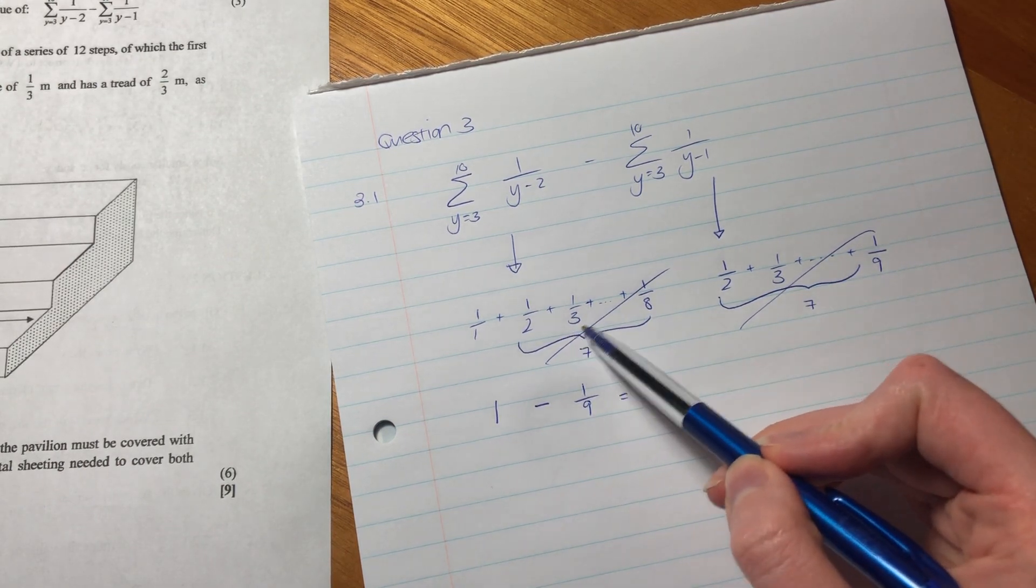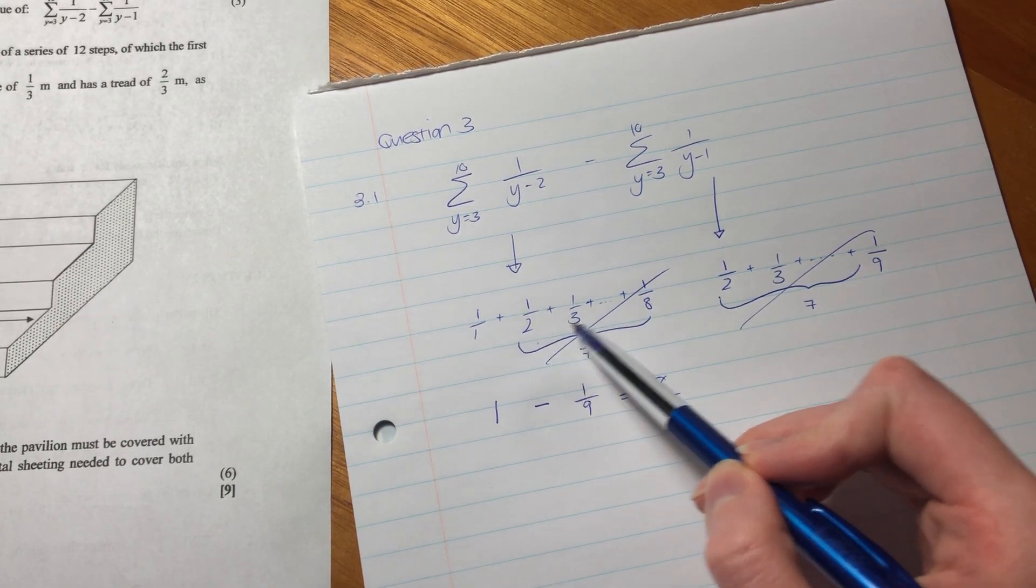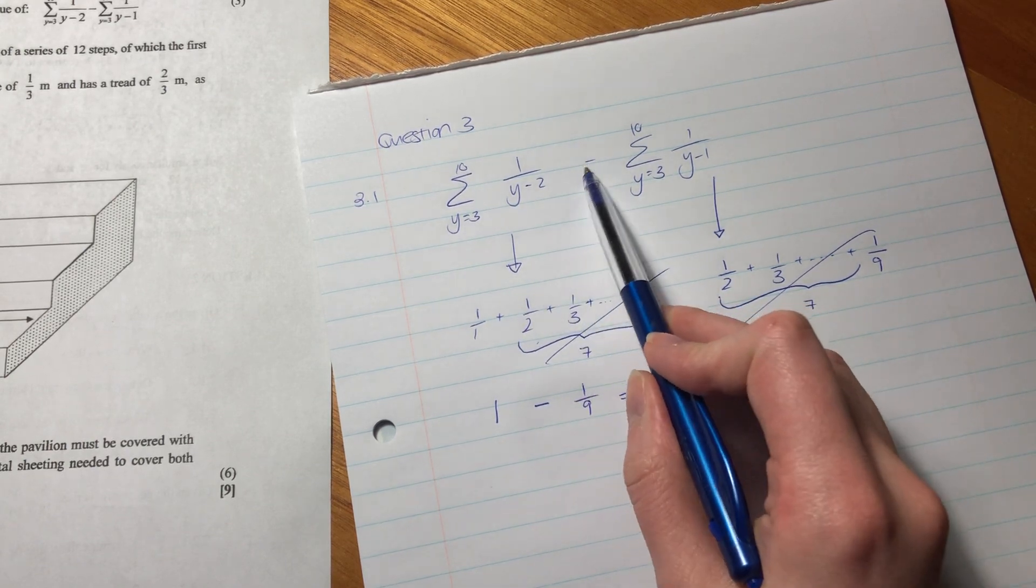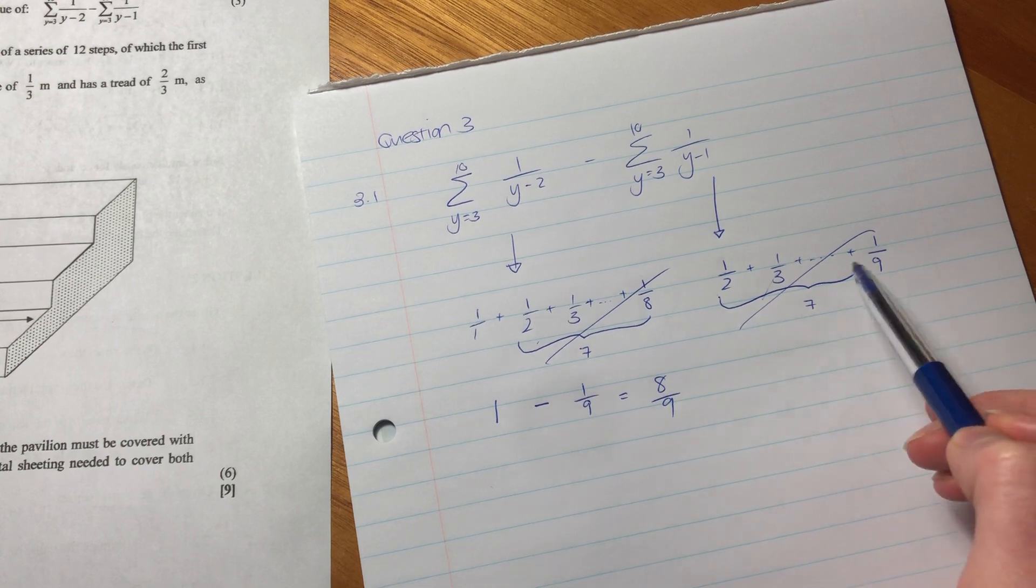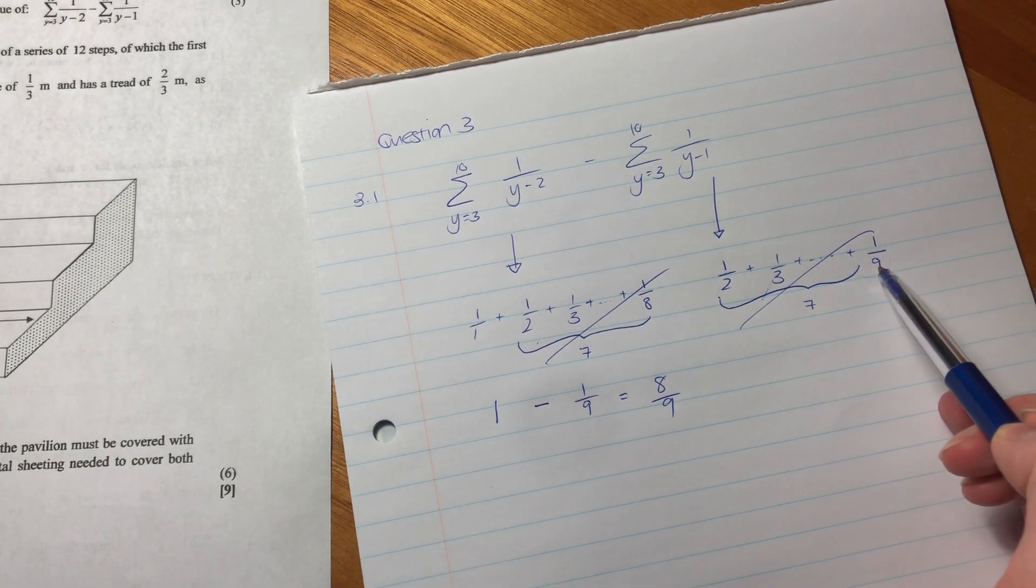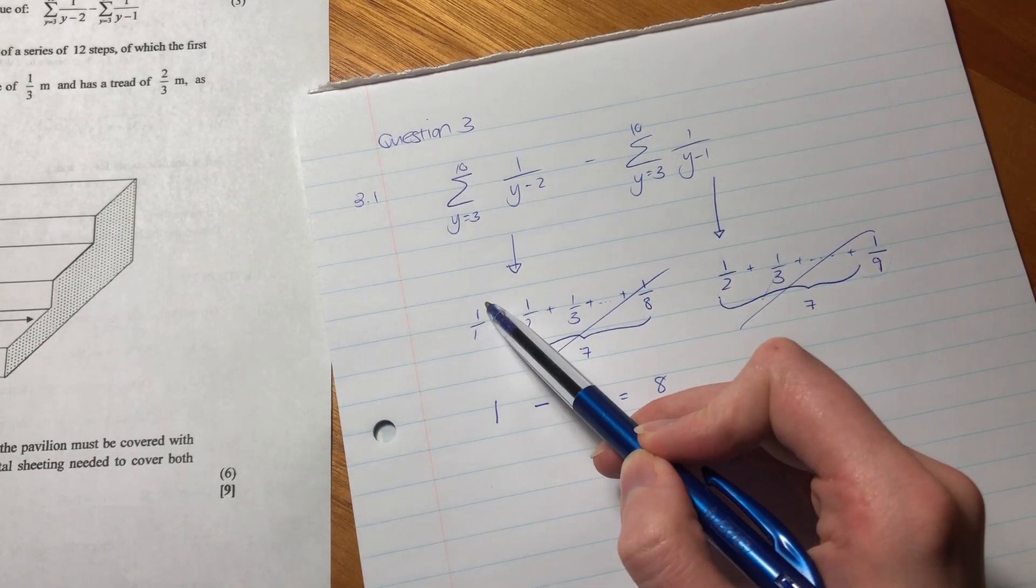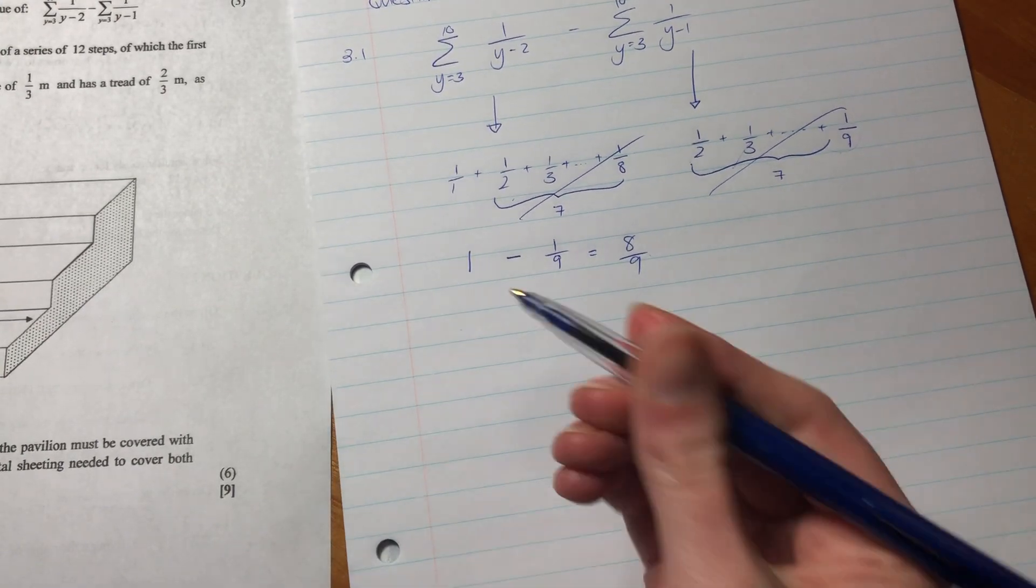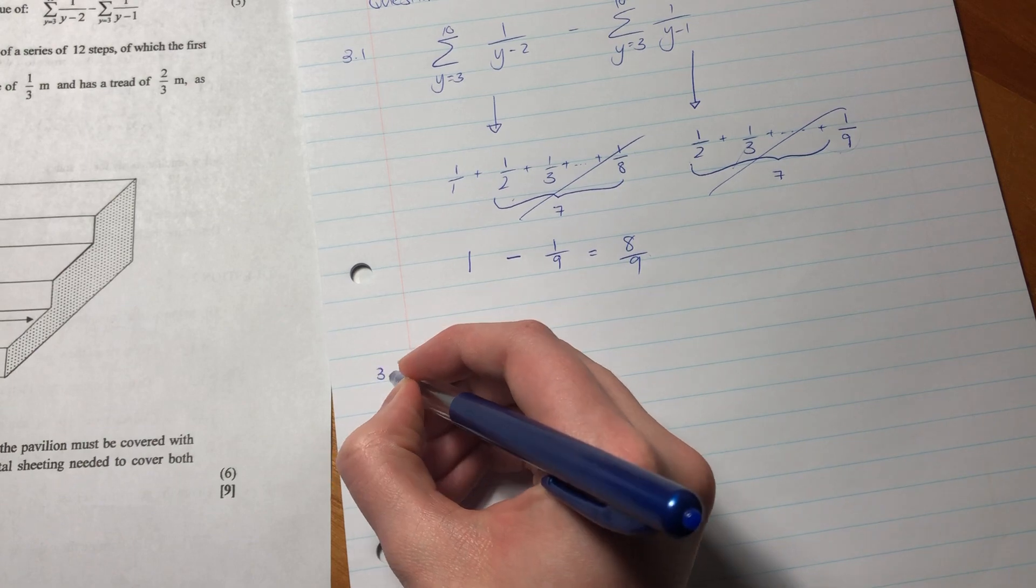So our answer is 8/9. You see, 1/2 cancels 1/2 because it's subtraction, 1/3 cancels 1/3, and so on. 1/8 cancels 1/8, but there's nothing to cancel 1/9, and we have 1 remaining. Not too difficult, just have to reason it out.